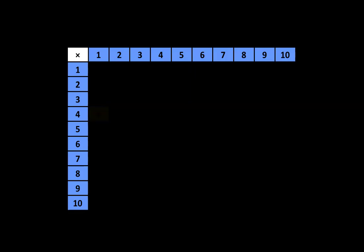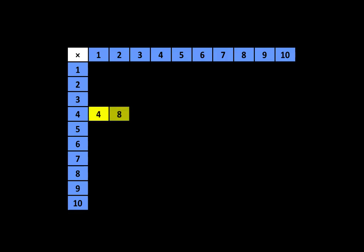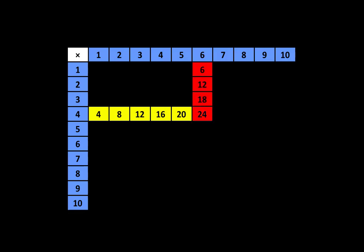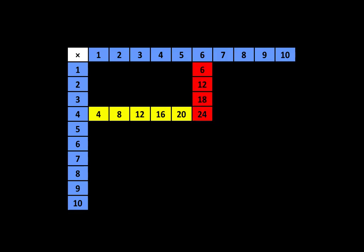You'll see that 24 is the 6th multiple of 4 — counting the multiples of 4: 1, 2, 3, 4, 5, 6. And 24 is the 4th multiple of 6 — counting the multiples of 6: 1, 2, 3, 4. Understanding that 24 is a multiple of both 4 and 6 is very important.